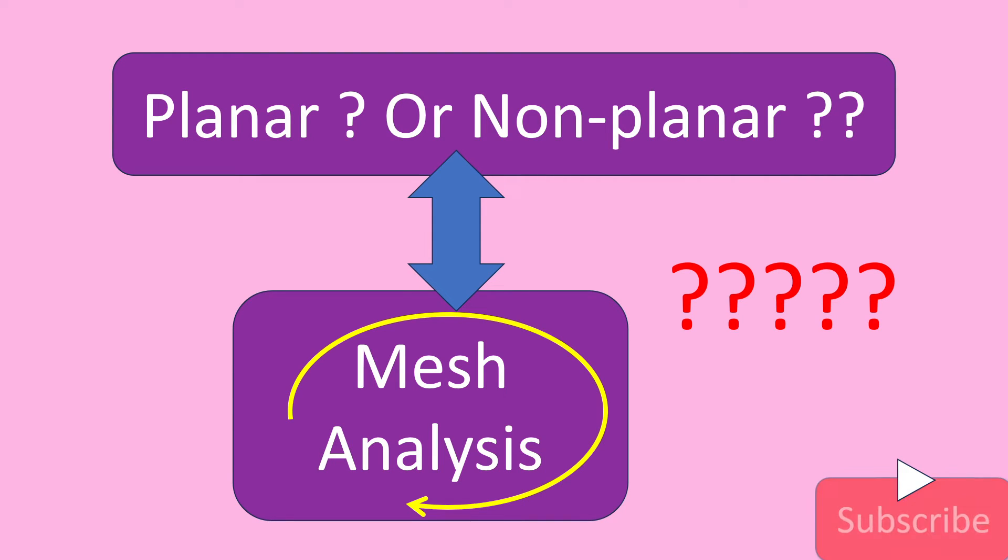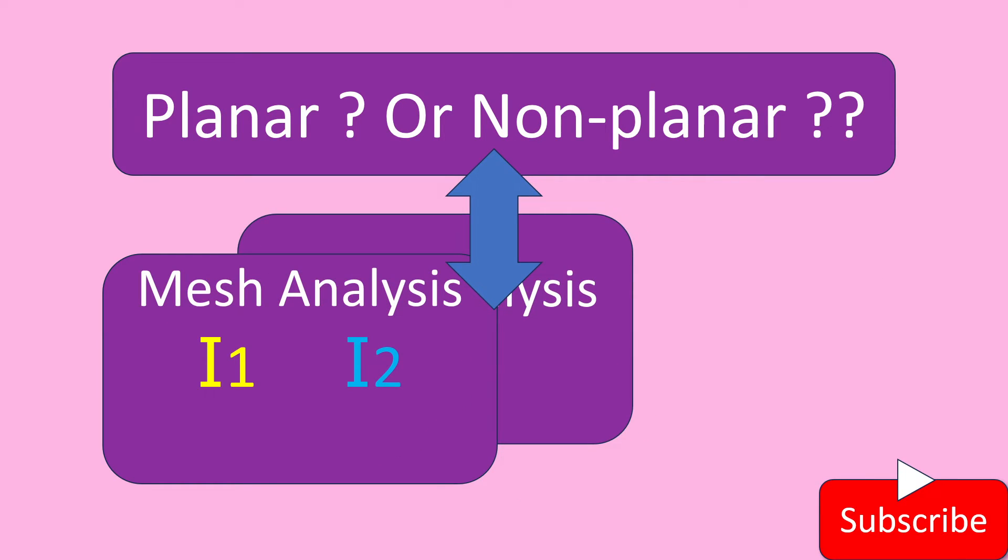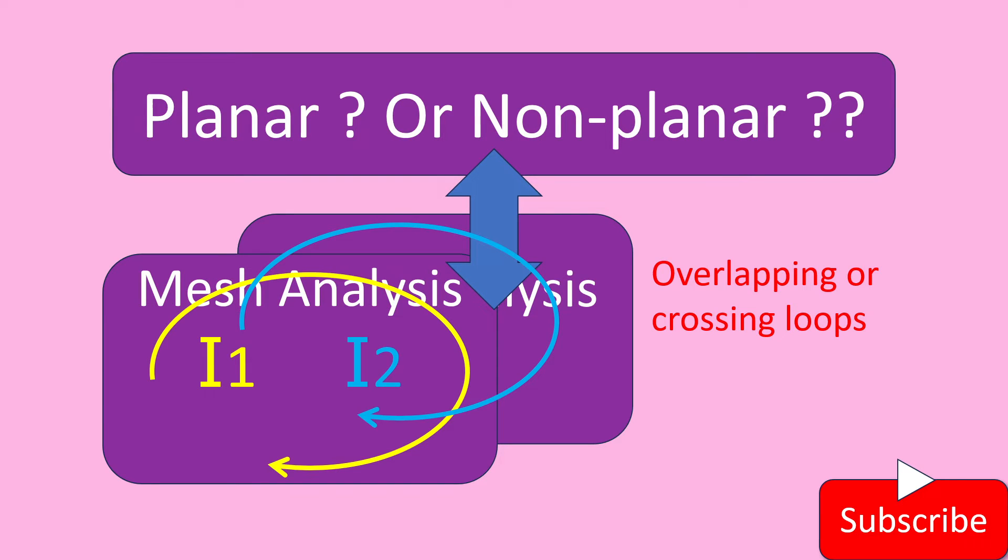In mesh analysis we form loops to find the mesh currents. The loops must be individual or separated in order to find out the mesh currents. A loop cannot cross any other loops - that is, overlapping or crossing loops are not allowed.